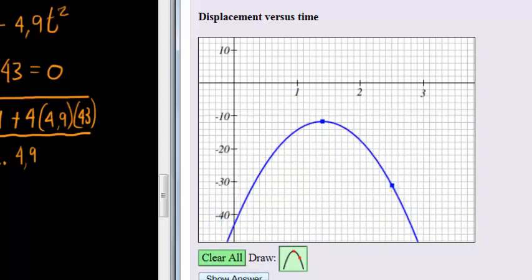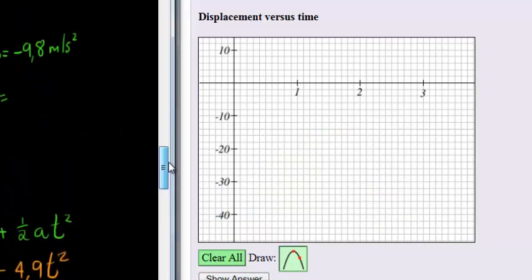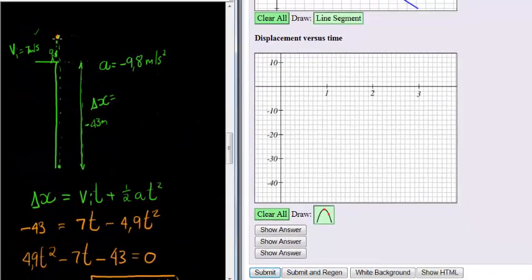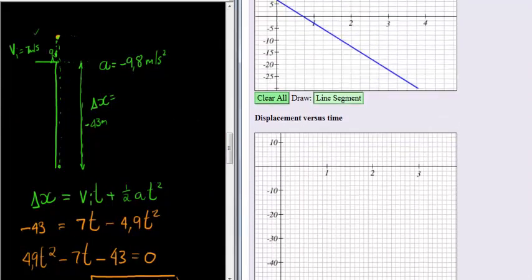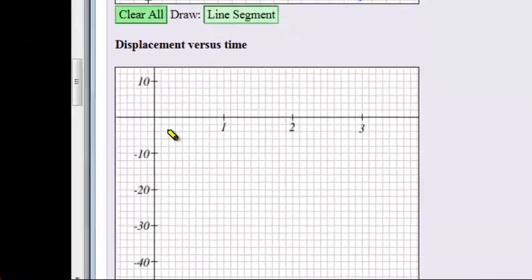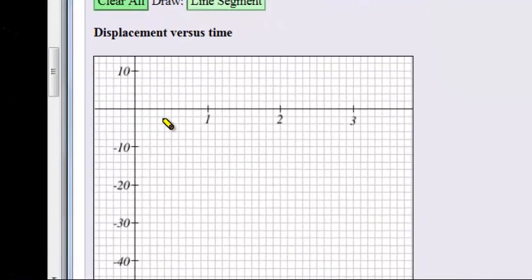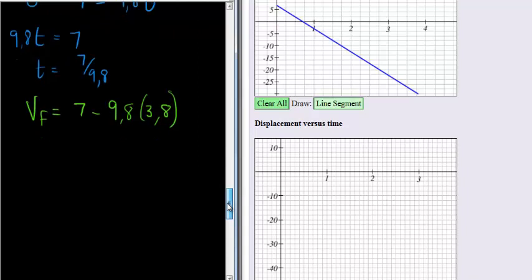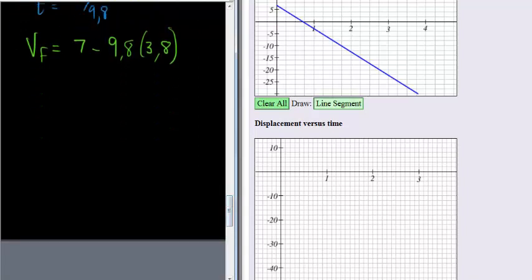Probably what we are going to have to do is first find where it reaches its maximum height. We've already calculated that in our previous question. It reaches its maximum height at 0.7 seconds. So if this is 1, 2, 3, 4, 5, 6, 7, it will reach it somewhere on this line. But now we just need to know how high will it be when it reaches that point. And obviously we simply use the formula for displacement.